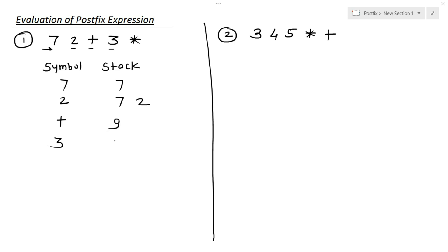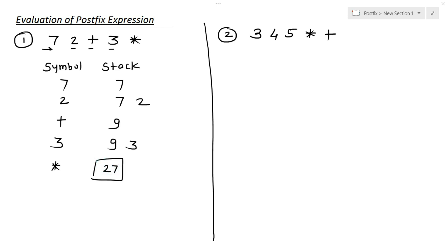The next symbol is 3, so we add 3 into the stack. In the stack we have 9 and 3, and then comes multiplication. We have only 2 operands left, so we multiply 9 by 3, which gives us 27. So this is our final answer.